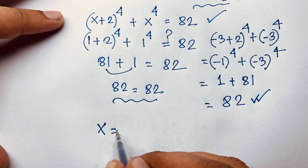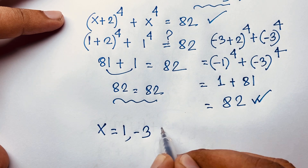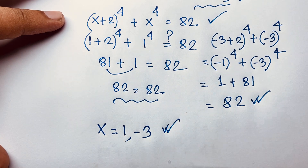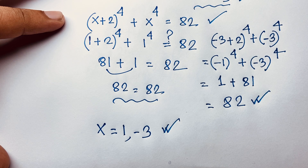Here x = 1 and x = −3. This is our final answer for this maths Olympiad question. If you enjoyed this video, please subscribe to my channel for other interesting videos. Goodbye, take care.